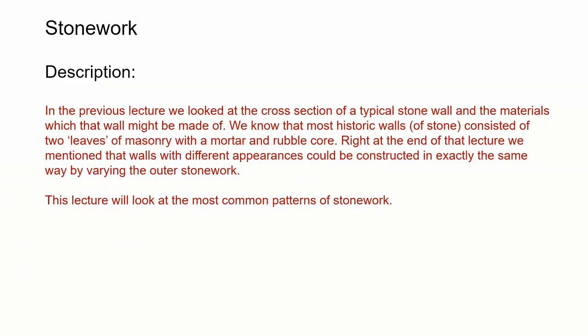In the previous lecture we looked at the cross-section of a typical stone wall and the materials that we might use to make that wall. We know that most historic walls of stone tended to consist of two leaves of masonry with a rubble core. Right at the end of that lecture we mentioned that walls with different appearances could be constructed in exactly the same way by varying the outer stonework.